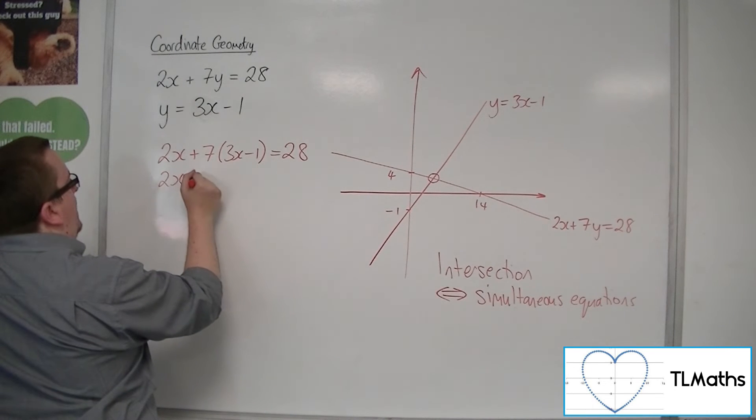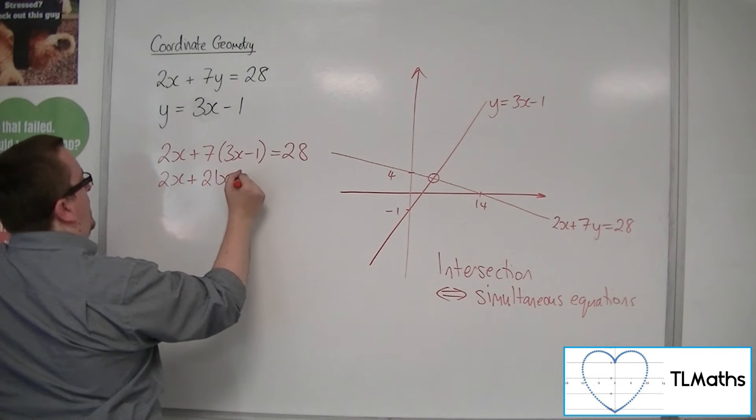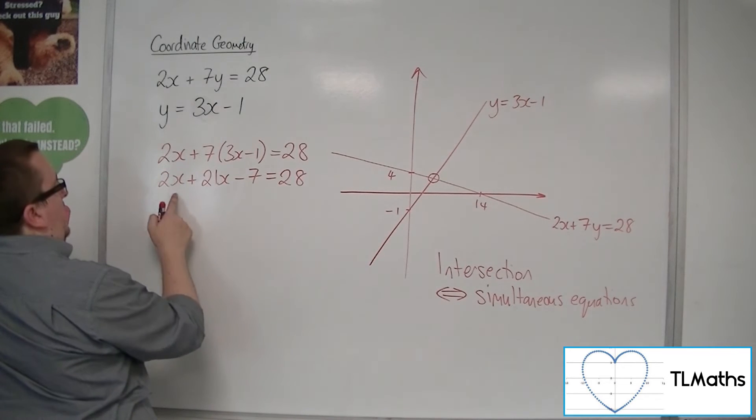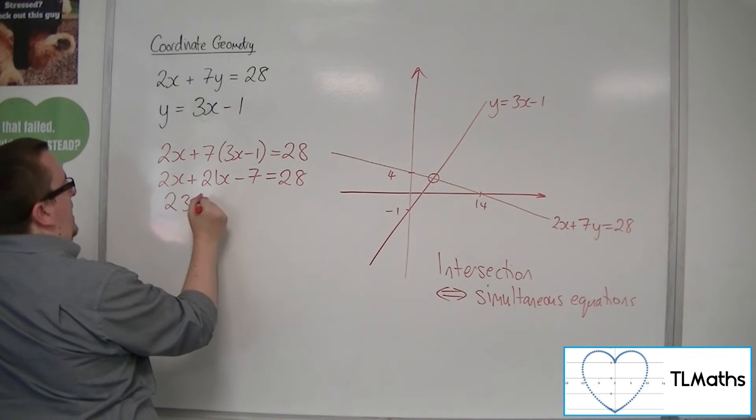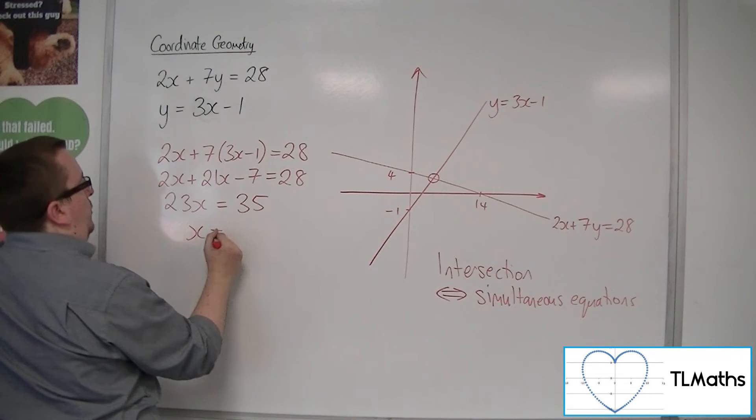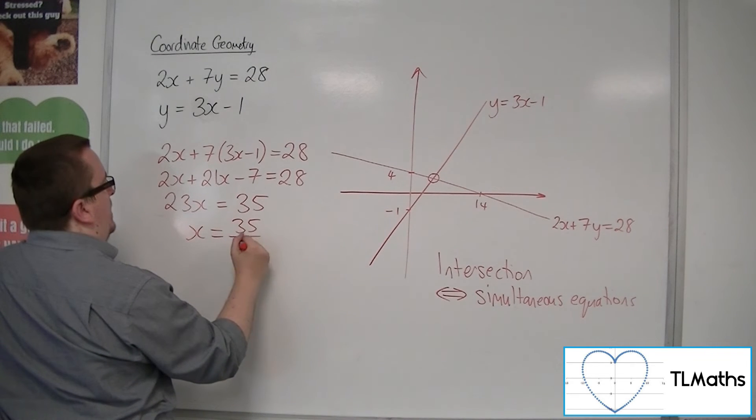So 2x plus 7 lots of 3x minus 1 is equal to 28. So if I multiply that bracket through, I get 21x minus 7. So 21x and 2x is 23x. Add the 7 to both sides and I get 35. So x will have to be 35 over 23.